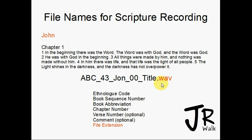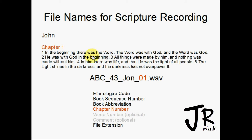The final element is the file extension — we always master to WAV files, but you can export to MP3 or OGG Vorbis for distribution. For the chapter name, it would be ABC_43_John_01. We always zero-pad the chapter number with two digits. For Psalms I would use three digits — zero-zero-one — because there are more than a hundred chapters. I typically export everything organized by book title and by chapters.